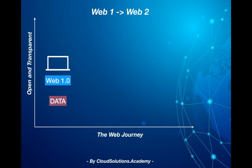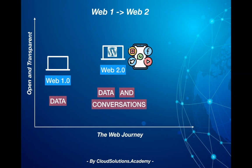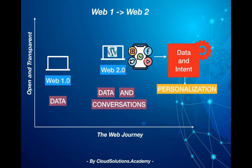With web 2.0 it was all about data and conversations, writing, sharing blogs and social interactions. Platforms like Facebook, YouTube, Instagram, WhatsApp, Google Maps, Google Ads, Netflix, and blog platforms like WordPress all led the web 2.0 revolution. All these systems basically tried to capture a piece of your data and your intent and use it to drive engagements and revenue.